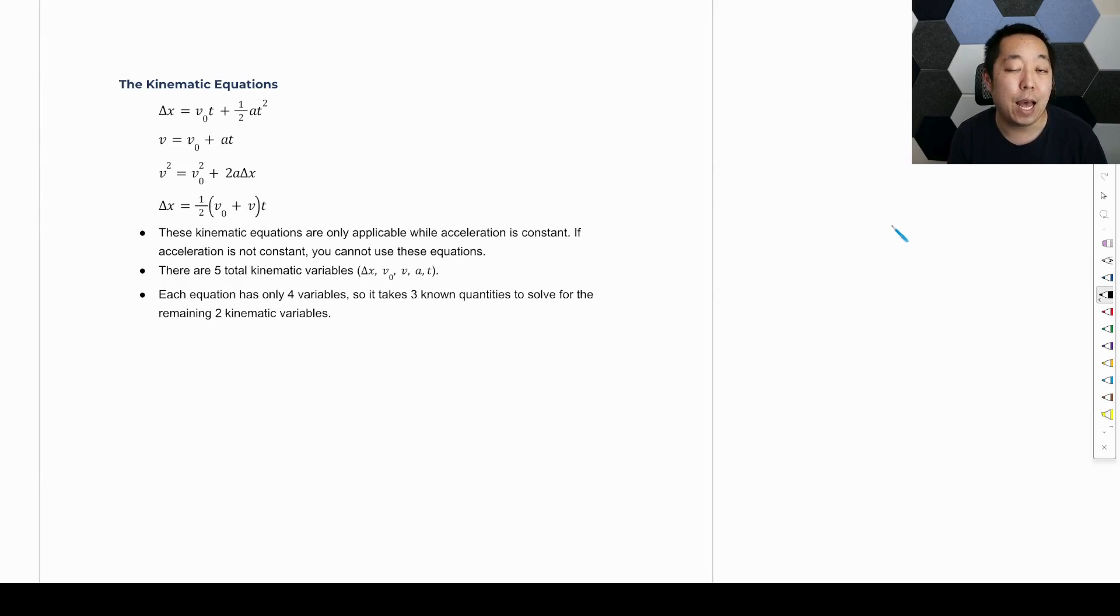All right, so now we're going to use the kinematic equations, and there are four kinematic equations that I like to use when we're solving problems. Three of them are given on the AP exam equation sheet. The fourth one is not, but I still think the bottom one is useful in certain instances. The way you want to think about this is these kinematic equations only apply when the acceleration is constant.